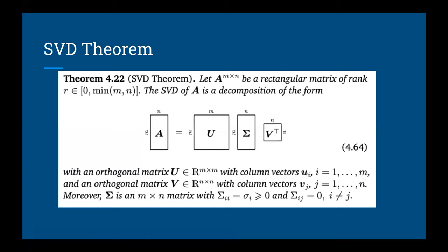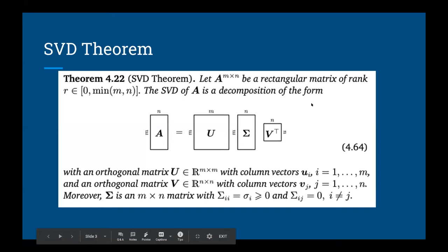I'm not going to read the theorem to you, but I'll help you understand how to read it. Our brain might get overloaded with all the information. What's the main thing that catches your eye? You have a matrix A, which seems like an M by N matrix, and it becomes three matrices — hence the word 'decomposition.' SVD of A is a decomposition of this form. Let's understand that SVD decomposes a matrix into three matrices.